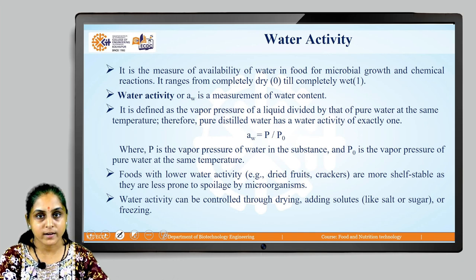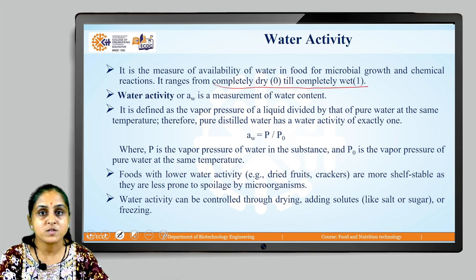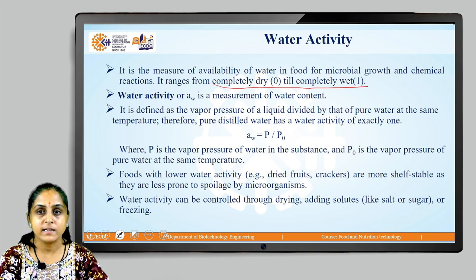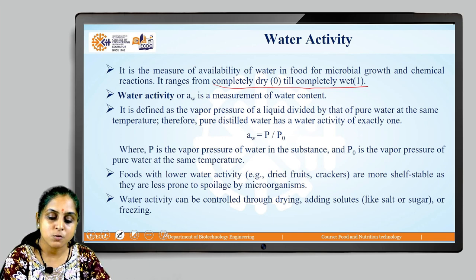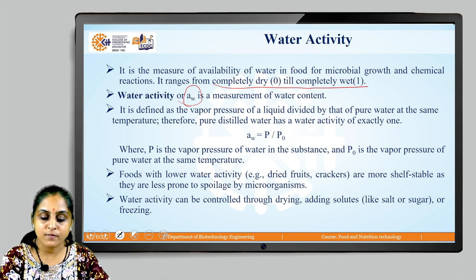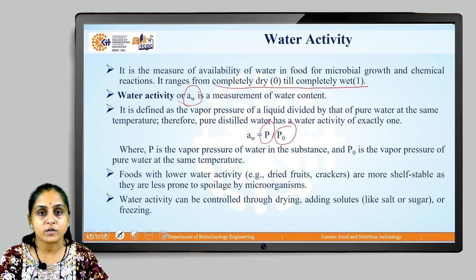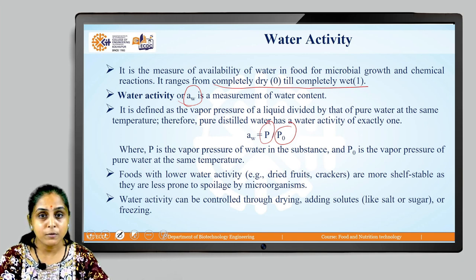Now let us understand what water activity is. It is the measure of availability of water in the food for microbial growth and chemical reactions. It ranges from completely 0 to 1 — based on whether the food substance is completely dry or completely wet. If it is completely dry, the number would be 0; if completely wet, it would be 1. Water activity is denoted by the symbol Aw. It can also be defined as the ratio of vapor pressure of water in the substance to the vapor pressure of pure water at the same temperature. Foods with lower water activity have more shelf life, and foods with higher water activity do not have a longer shelf life.